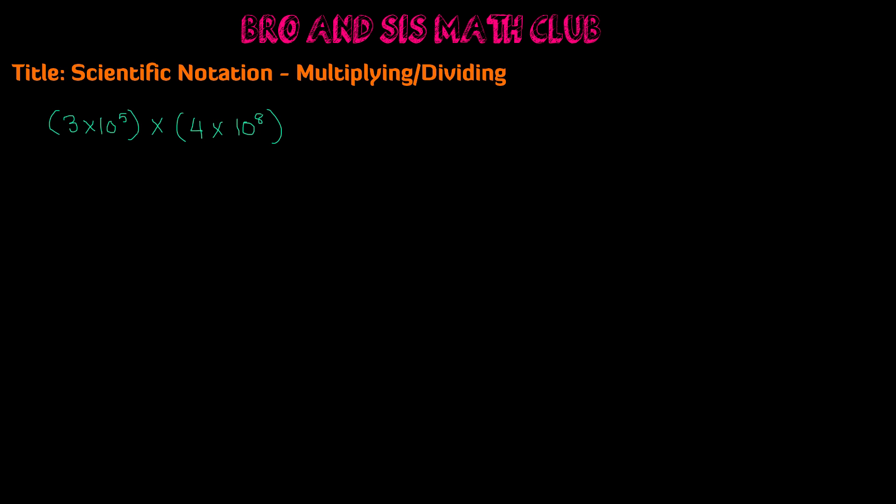In order to multiply these two numbers, first we need to combine like terms. Here we don't have any variables, but our exponents with the same base — which is 10 — are different terms, and our constants are different terms. So our constants are 3 and 4, and our exponents are 10 to the 5th power and 10 to the 8th power. We're going to multiply the constants by each other and then the exponents by each other.